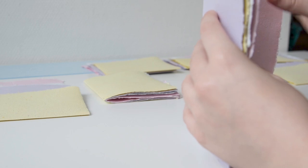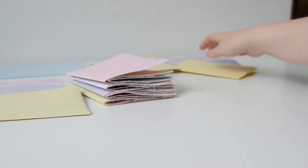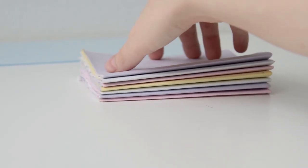I want all the pages to be in a random color order, so I make sure to change up how I place them. Once you have done that, you can stack all the signatures on top of each other in the order you wish, and that will be your text block. Exciting!